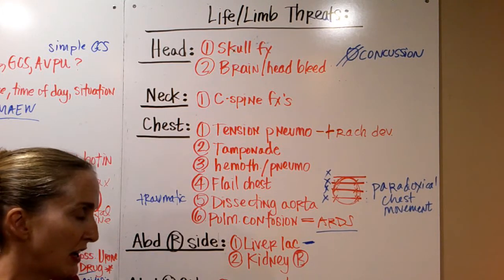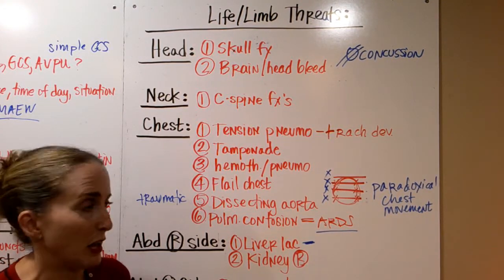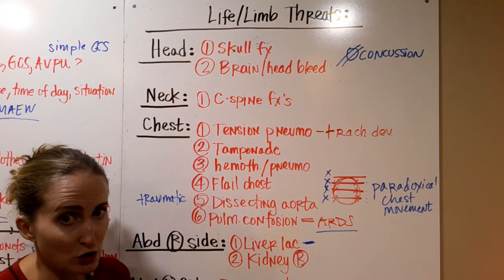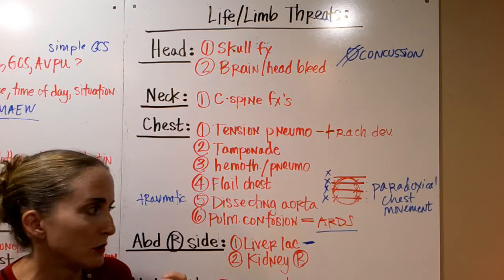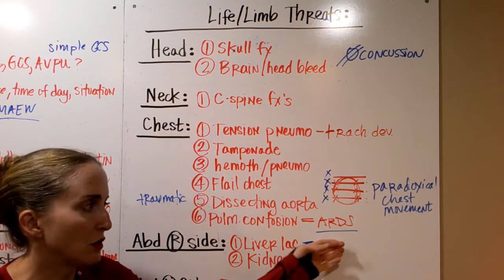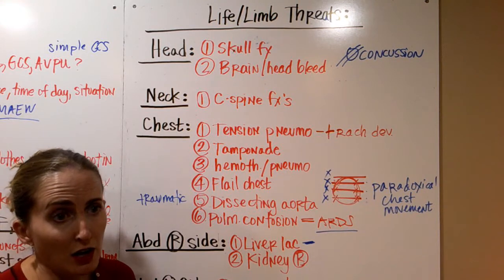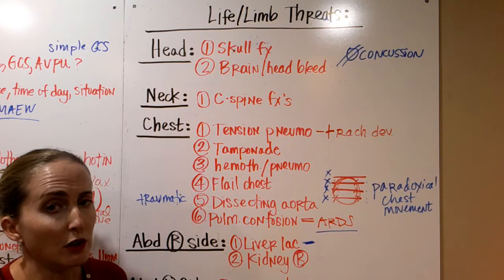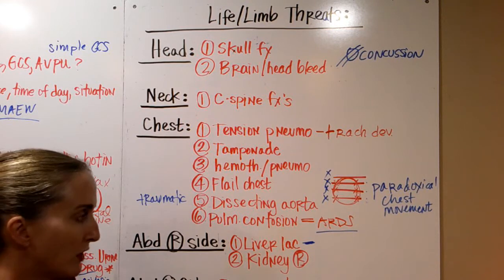A pulmonary contusion can also occur — it may sound benign but it's not. It's a bruise not just on the outside but on the actual lung tissue inside, leading to edema and swelling. This can cause respiratory distress or acute respiratory distress syndrome. The patient may be talking to you at the beginning, but this must be watched over 24–48 hours to ensure they don't develop respiratory distress.